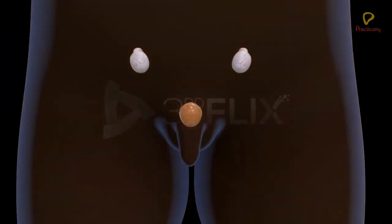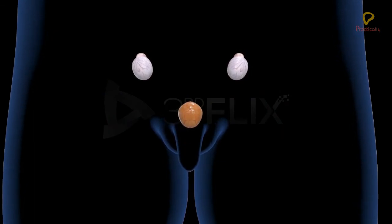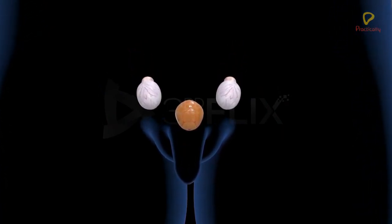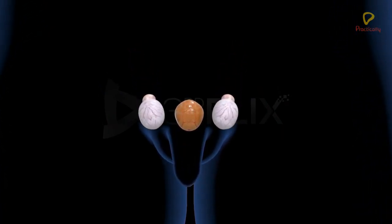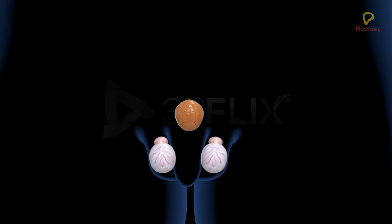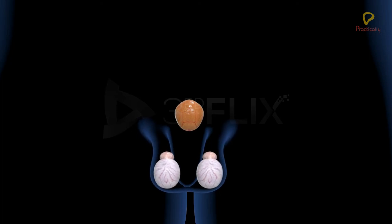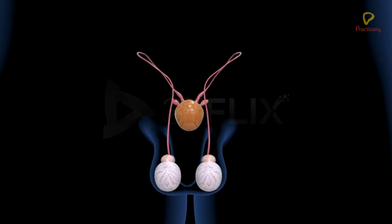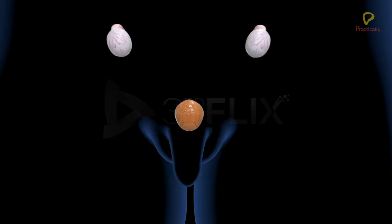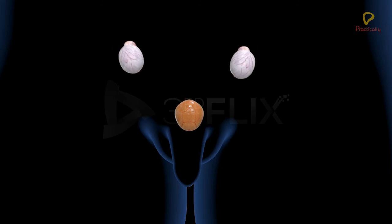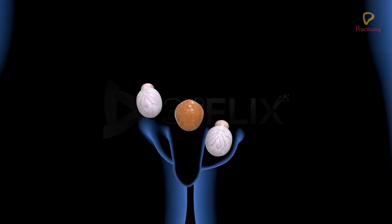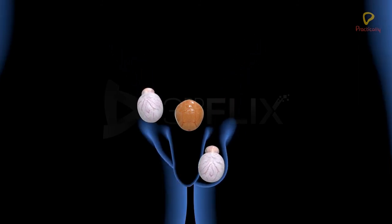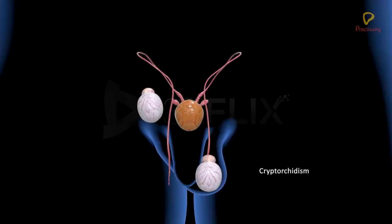The inguinal canal is the path of descent of the testes from their abdominal position into the scrotal sac. This occurs at birth. Failure of one or both the testes to descend into the scrotal sac is known as cryptorchidism. It causes sterility.